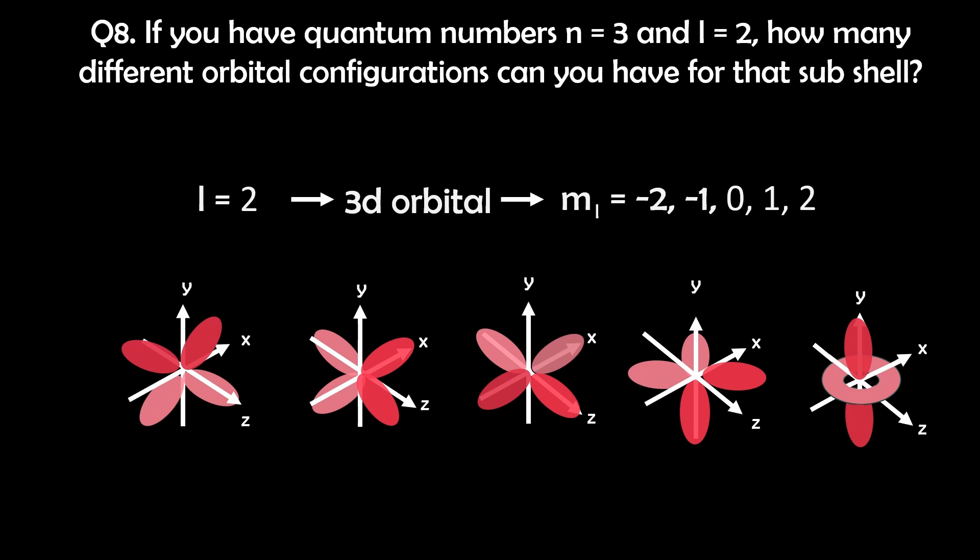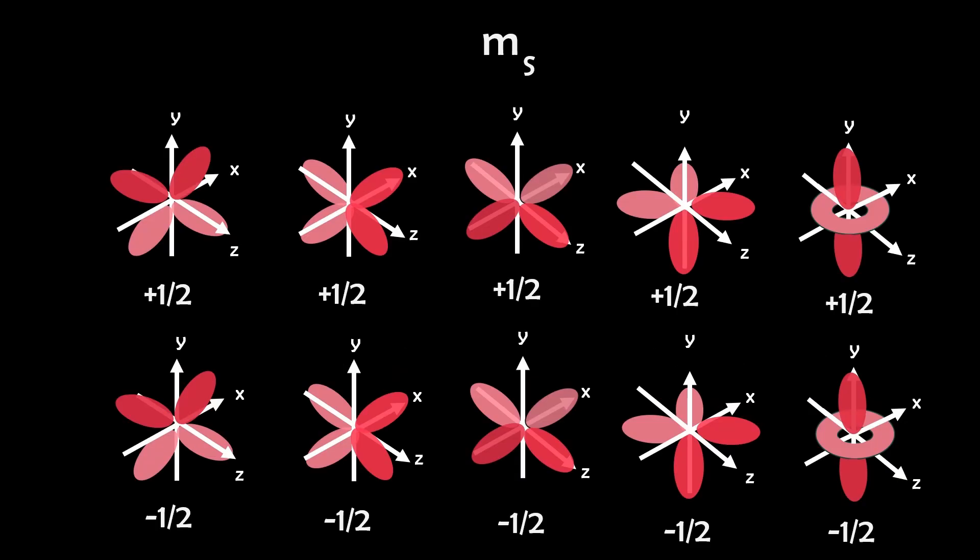This totals five different orientations for the d orbitals. For the spin quantum number M sub S, each orbital can hold up to two electrons with opposite spins. For each M sub L value, there are two possible spins: positive 1 half and negative 1 half. Therefore, in total, we have five different orientations and two spins per orientation, so five times two gives us 10 possible configurations for the electrons in the 3d orbitals.